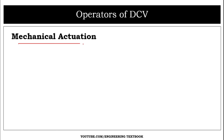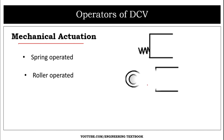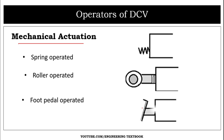Mechanical actuation has three types: spring operated, roller operated — where a roller is attached to the DCV — and foot pedal operated. These three are all forms of mechanical actuation.